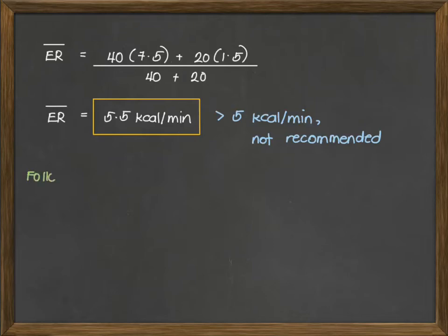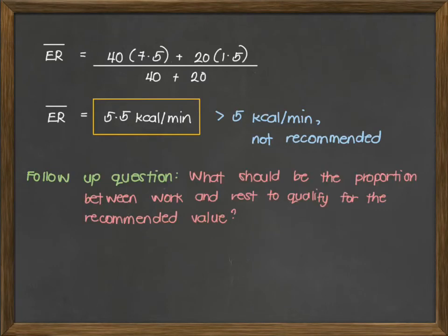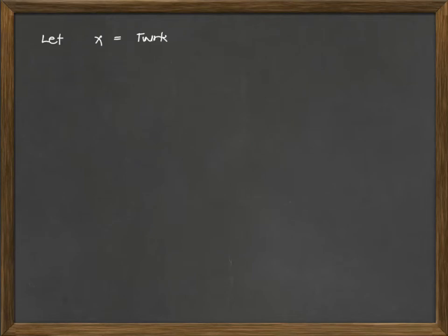We have the follow-up question: what should be the proportion between work and rest to qualify for the recommended value of 5 kcal per minute? Note that if the given problem specifies a female worker, the basis would be 4 kcal per minute. We let x as your T work, and 60 minus x as your T rest, since the total working time is 60 minutes.